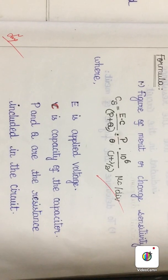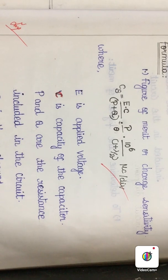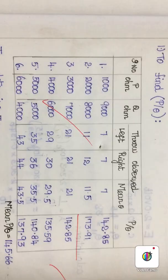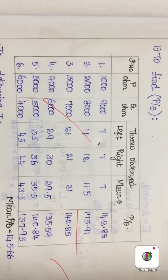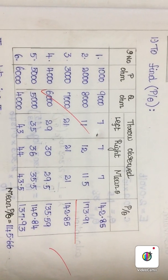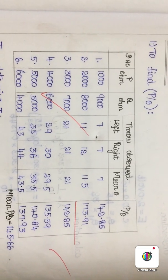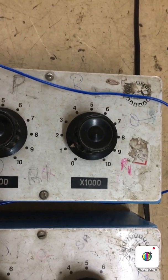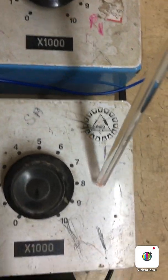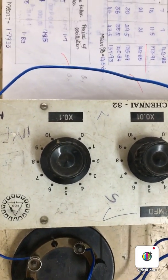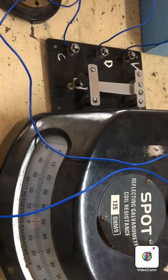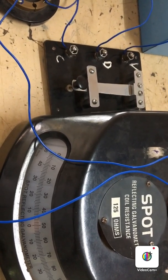To observe the charge sensitivity, we need to record the formula P by theta. To find the value of P by theta, we need different combinations of P and Q, and we are going to observe the throw recorded in the BG by changing the commutator directions. For example, the first P value is set as 1000 ohms and Q value is set as 9000 ohms, and the C value is set to 0.1 microfarad. We shall record the first reading for P equals 1000 ohms and Q equals 9000 ohms.